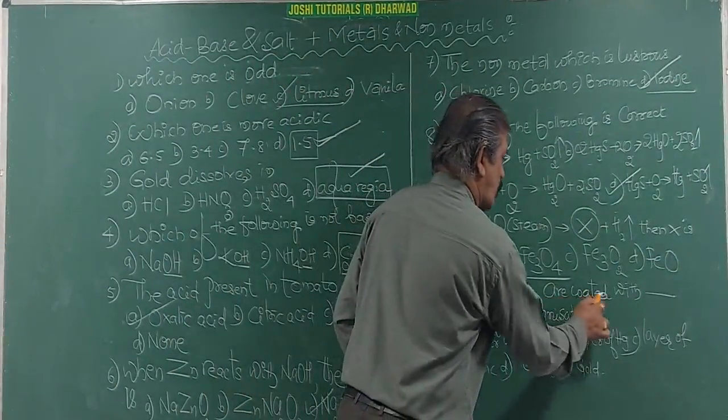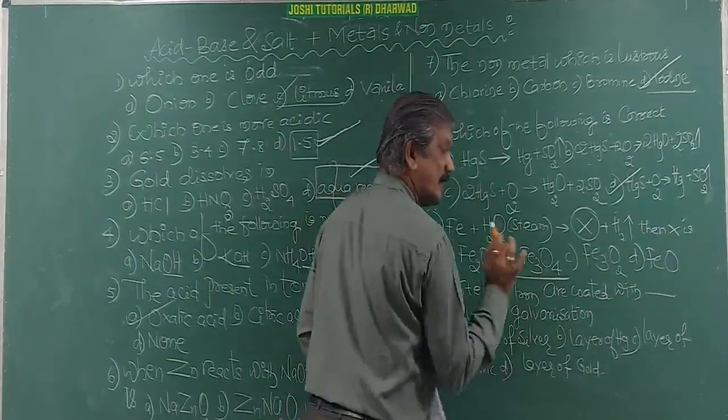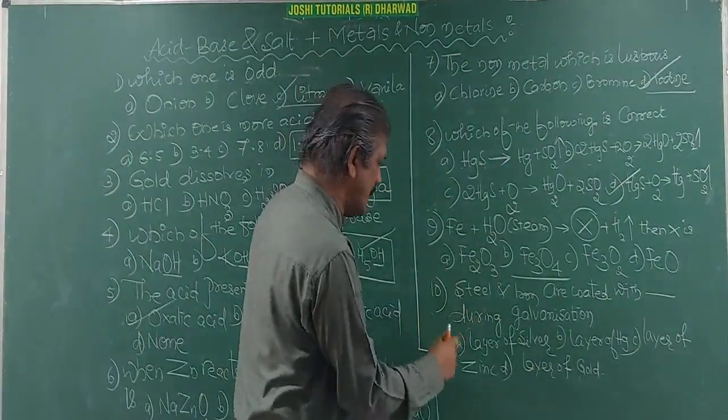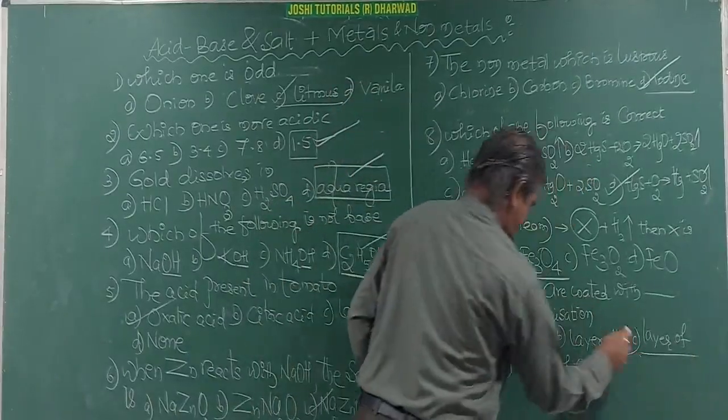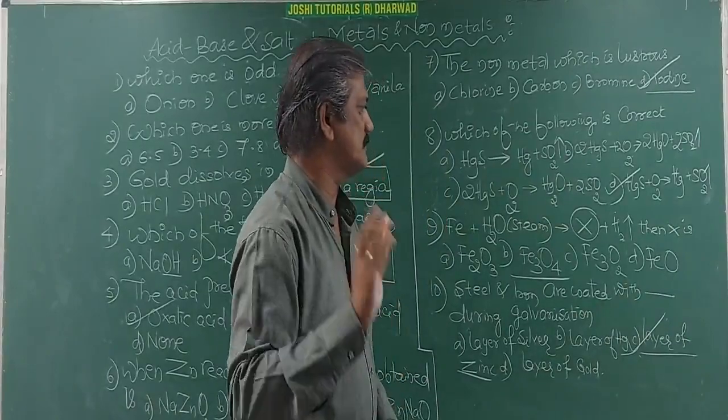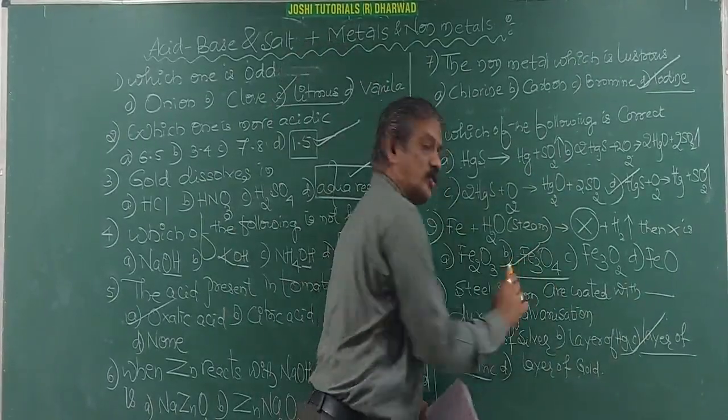Steel, iron are coated with dash during galvanization. Galvanization means layer of zinc. Where it is, it is here. You must be specific. So in this way you must study the chemistry.